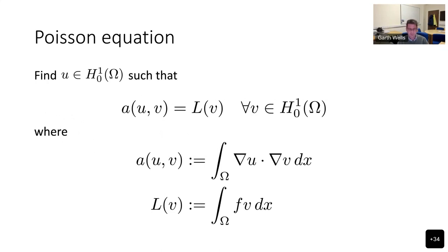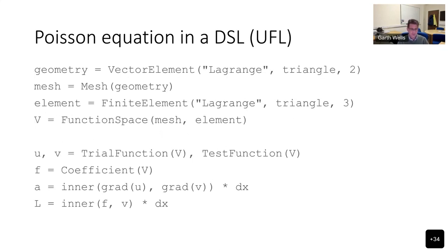Back to the Poisson equation. We have the weak form: the bilinear form A and linear form L. If you focus on the bilinear form, it's just grad u dot grad v, integrated over the domain. In UFL, we've got grad u, grad v inner product, integrated over dx — very closely related to standard mathematical notation, and most people could infer it without knowing anything about UFL. At the top, we define some geometry and a mesh, then a finite element, a function space on the mesh for that element, test and trial functions, and away we go. For people who have never picked up the UFL manual, this is often self-explanatory.